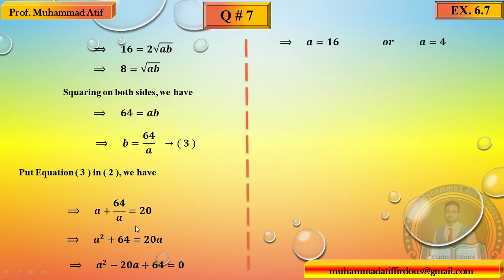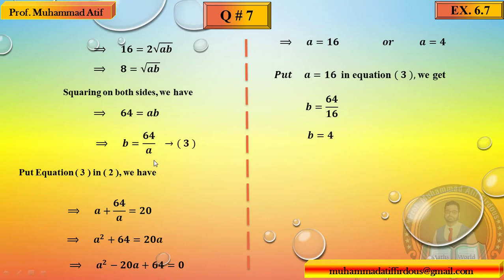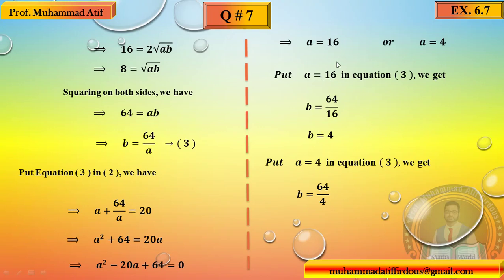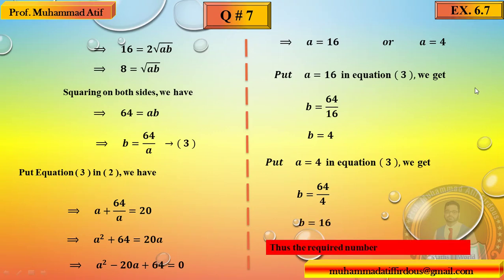a اور b دونوں آ گئے: a = 16 تو b = 4، یا a = 4 تو b = 16۔ یہ shuffle ہو رہے ہیں لیکن answer وہی ہے: دونوں numbers 4 اور 16 ہیں۔ دونوں conditions verify کر کے دیں تاکہ paper میں مسئلہ نہ ہو۔